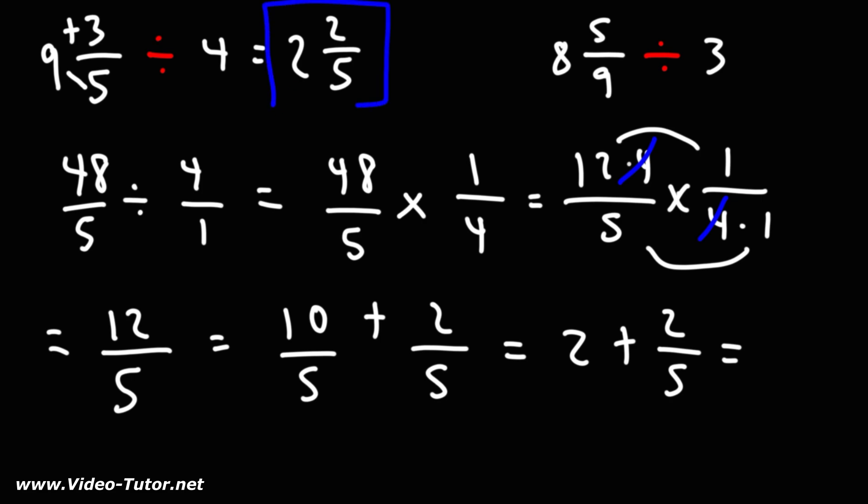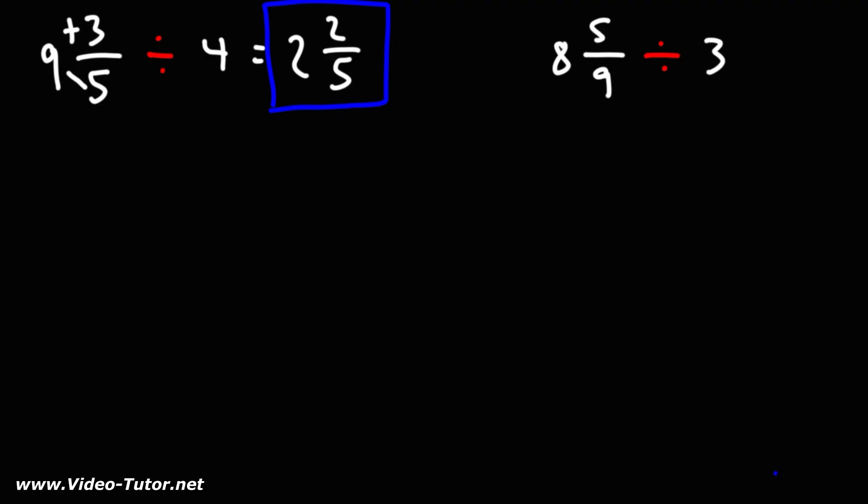So that is the answer. That's how you can divide a mixed number by a whole number. Now let's move on to the second example. Let's do the same thing. If you want to pause the video to try it, feel free to do so at this point.